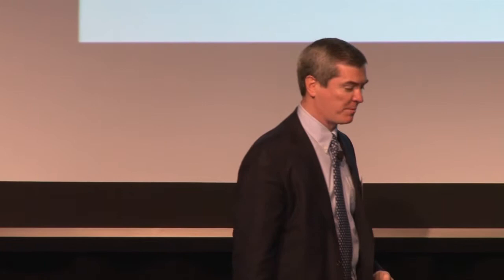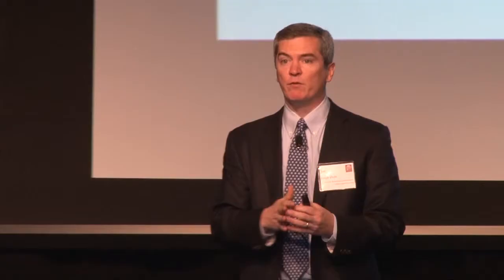Let me give you one last natural experiment: does hospital choice matter? If you have a health emergency, does it matter which place you go? I live equidistant from a community hospital and an academic medical center and prefer the academic center. What's the effect on costs and outcomes? With natural experiments, you're trying to compare similar patients treated at different hospitals — but people choose their own hospitals, making it very difficult to compare outcomes across them.